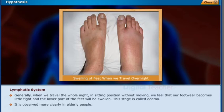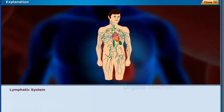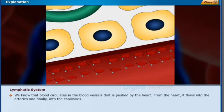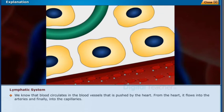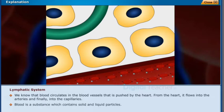Now let us learn why this happens and why our legs swell when we travel overnight. We know that blood circulates in the blood vessels, pushed by the heart. From the heart, it flows into the arteries and finally into the capillaries. Blood is a substance which contains solid and liquid particles.